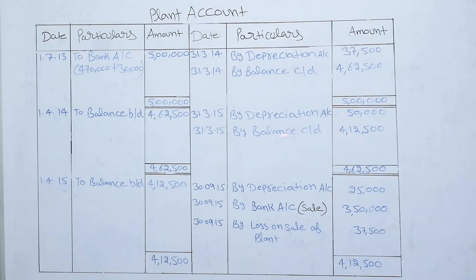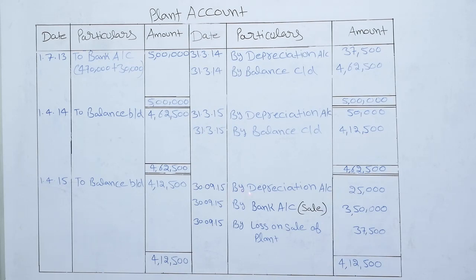Depreciation for Year 2: Rs 5,00,000 × 10% = Rs 50,000. Balance carried down is Rs 4,12,500. This balance will go down to the next year. On 1st April 2015, balance brought down is Rs 4,12,500. In the third year, the company sold the machine on 30th September 2015, so we will charge depreciation for a period of 6 months. Full year depreciation is Rs 50,000, so half year depreciation will be Rs 25,000.